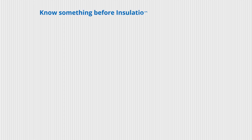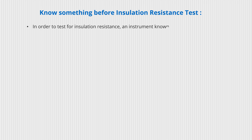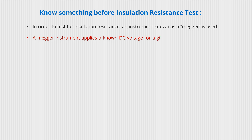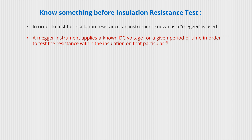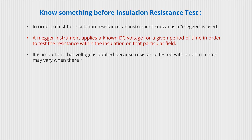Before performing an insulation resistance test, you should know that an instrument known as a megger is used. A megger instrument applies a known DC voltage for a given period of time to test the resistance within the insulation on that particular field. It is important that voltage is applied because resistance tested with an ohmmeter may vary when there is no potential difference present.